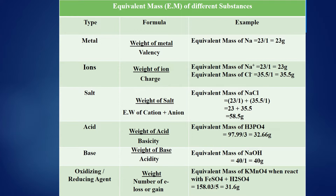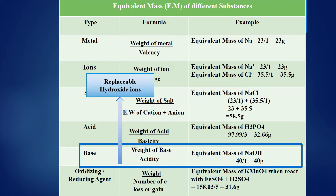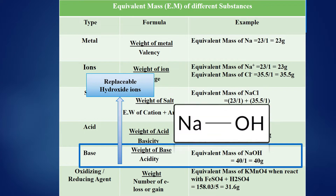Let's discuss in detail how we can find the equivalent mass of a base. For finding equivalent mass of base, divide the molecular weight of base by its acidity, where acidity is the number of replaceable hydroxide ions in the base. If you draw the structure or write the formula of the base, you can easily find out how many replaceable hydroxide ions are present in it. For example, sodium hydroxide has only one replaceable hydroxide ion, so its acidity is 1. Dividing 40 (molecular weight of NaOH) by 1 gives an equivalent mass of 40 grams.